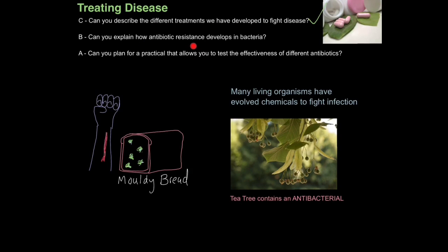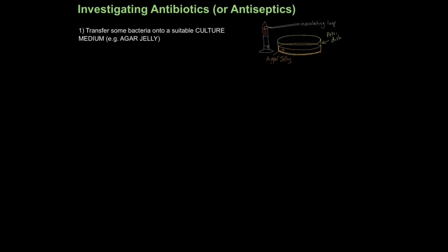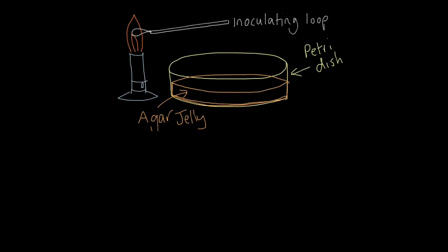Finally, let's look at how we can plan an investigation to find out how powerful an antibiotic or antiseptic is. First, transfer some bacteria onto a suitable culture medium — a substance that contains the nutrients that allows bacteria to grow. In school we commonly use agar jelly, made from seaweed, which contains carbohydrates and proteins that bacteria like. Get a petri dish, pour in the liquid agar jelly, leave it to cool and solidify. Then get an inoculating loop — a wire loop — heat it under a Bunsen flame to sterilize it, dip it into your bacteria solution, and streak it across the agar jelly to inoculate it.